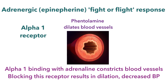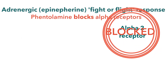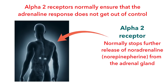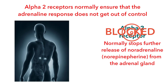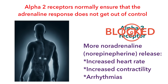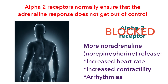Because phentolamine is non-selective for alpha-1, it also hits the alpha-2 receptor. This is where it becomes complicated, because the alpha-2 receptor is there to make sure that the adrenaline response doesn't go out of control. By blocking the effects of the alpha-2 receptor, we basically block the negative feedback. The bottom line is that by binding to the alpha-2 receptor, we wind up with a big release of noradrenaline, which actually increases the heart rate and the contractility.